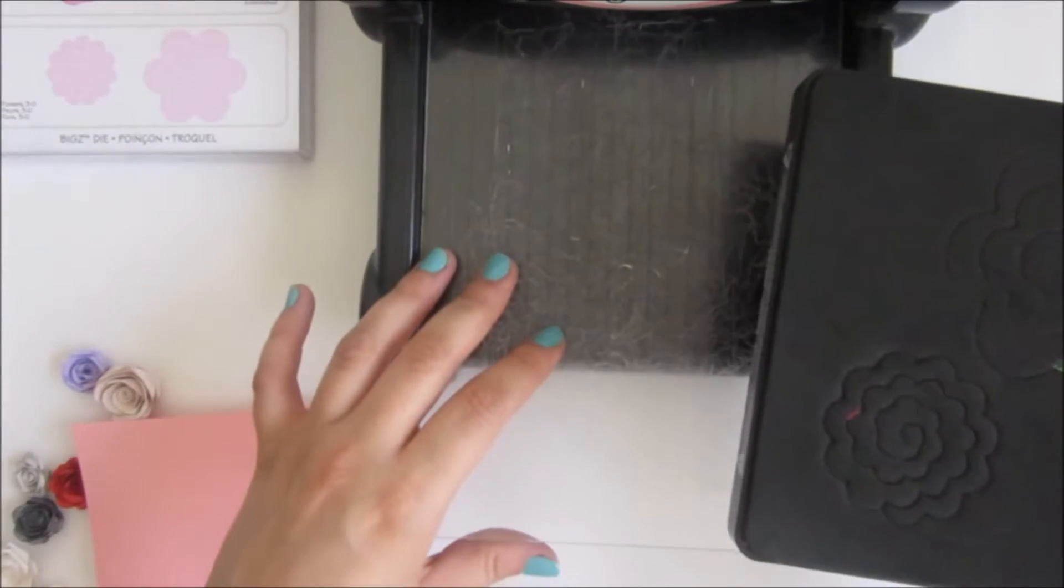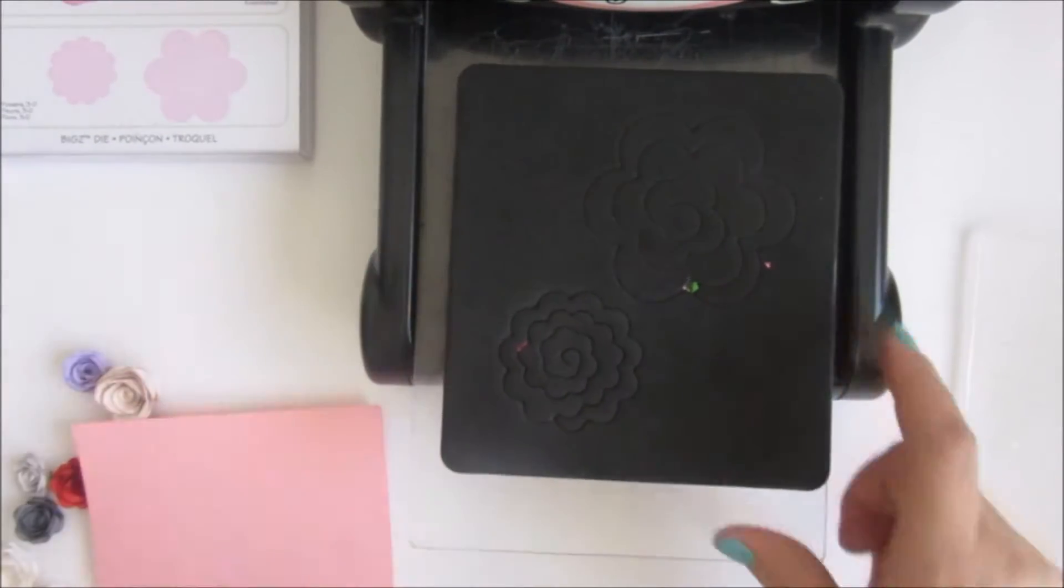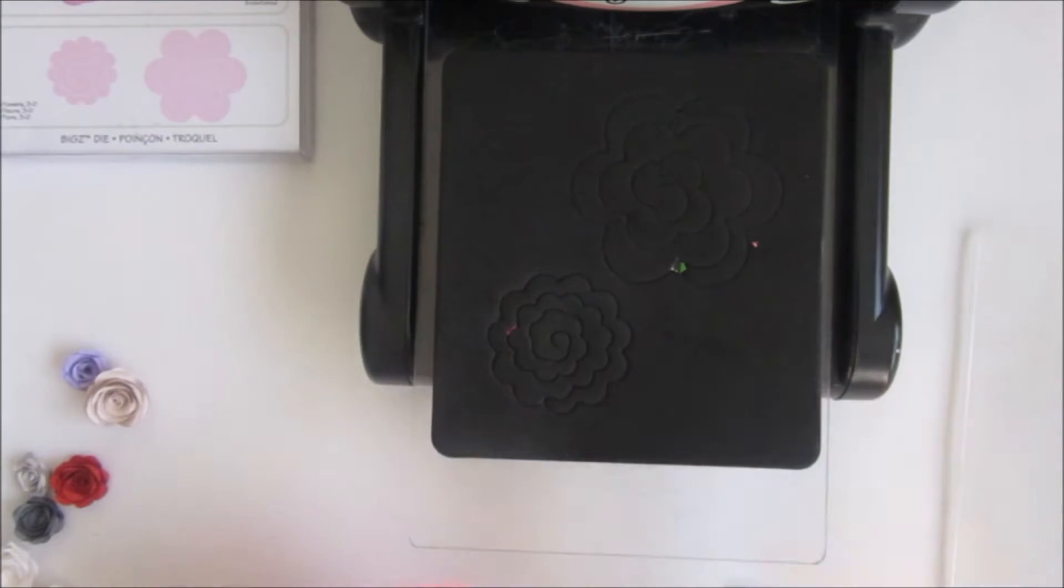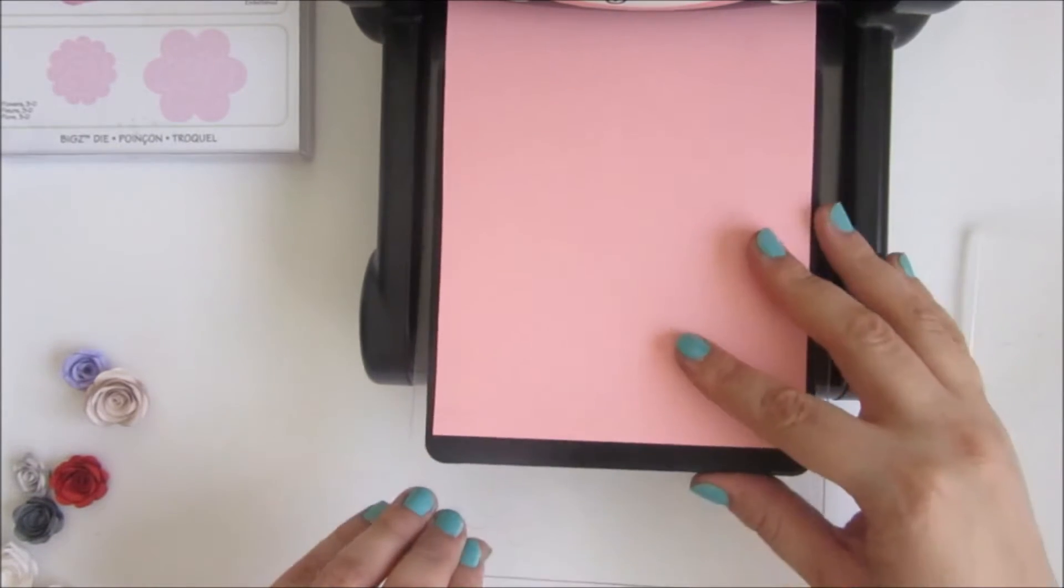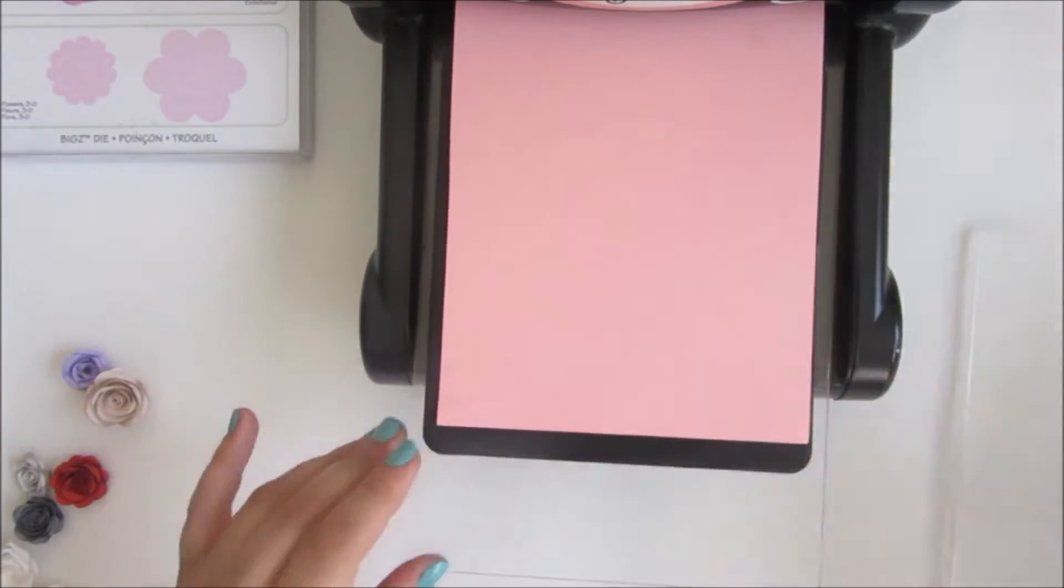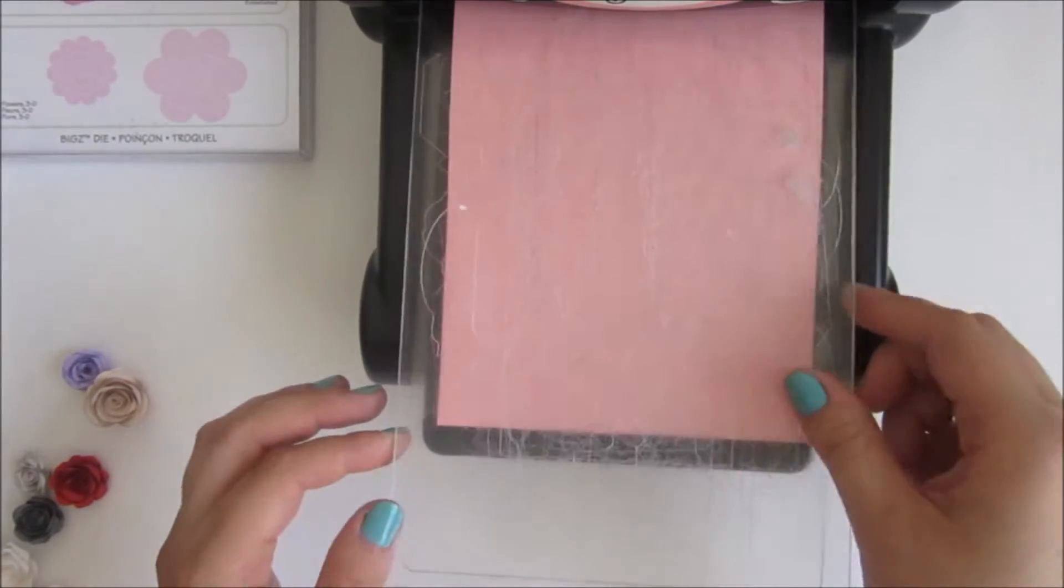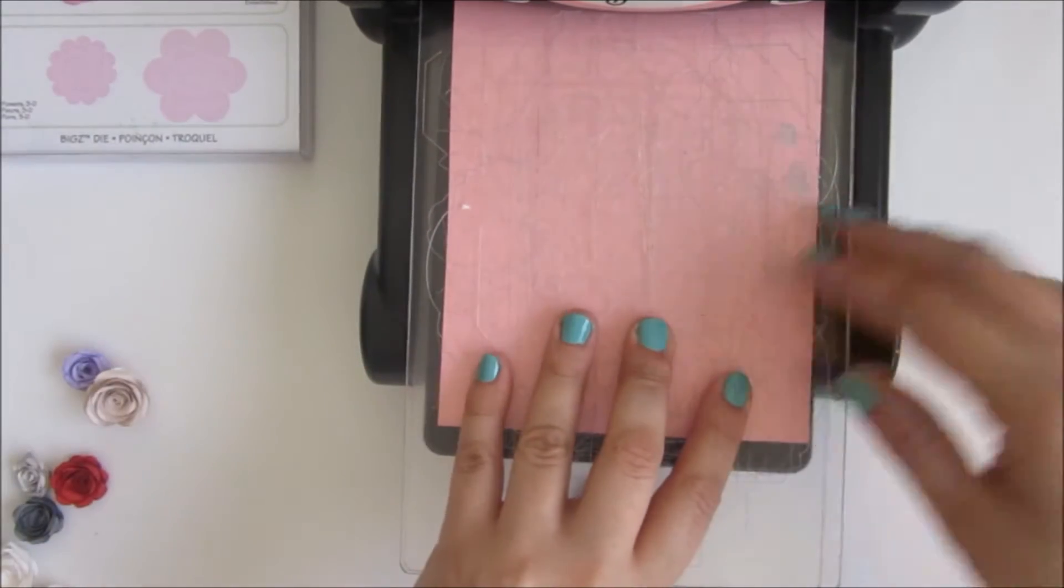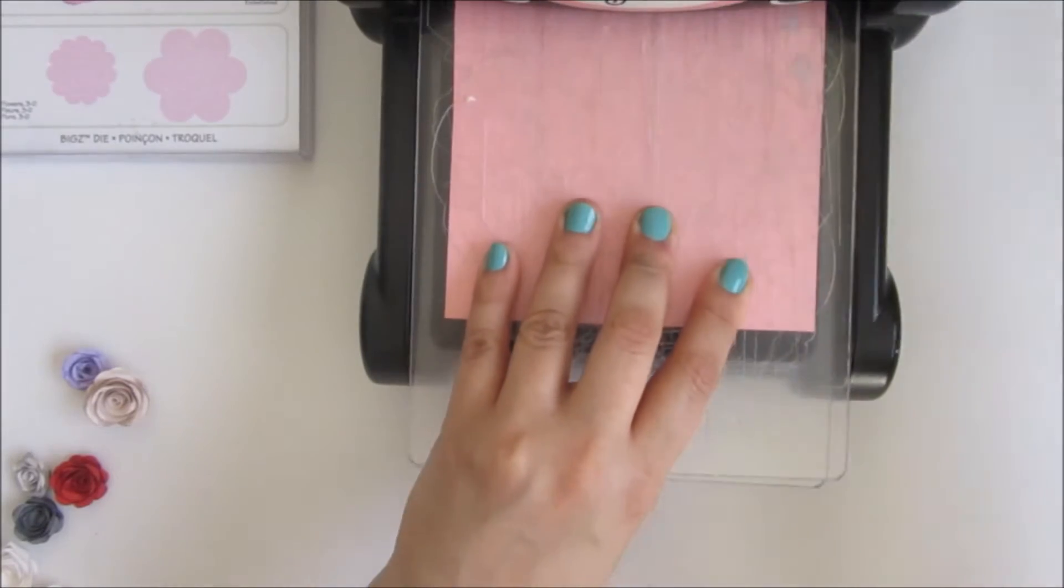Now place the die on top of the layer. Just make sure that the shape is up, and then place the paper on top and the other layer. Roll it two times, three times till you get the perfect shape.